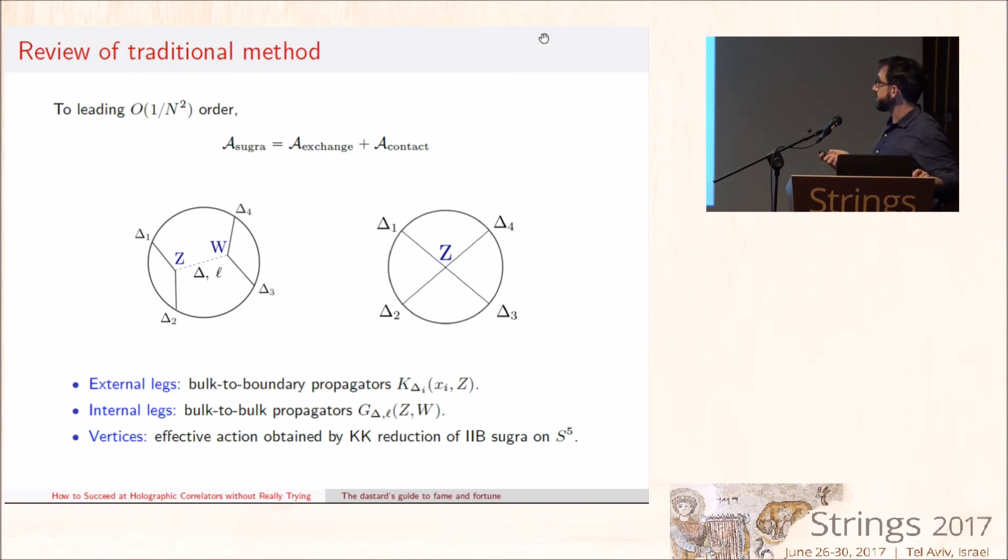On the gravity side, one is instructed to compute the sum of tree-level Witten diagrams, which are just position space Feynman diagrams where the external legs are treated differently than the internal legs. This is a sketch of anti-de Sitter space. The interior is the space, and the circle represents the boundary, which is flat space where the field theory lives. Z and W are bulk coordinates, so you have a bulk-to-bulk propagator with boundary conditions such that it decays fast near the boundary, whereas the bulk-to-boundary propagators obey Dirichlet boundary conditions, which reflects the fact that the external legs are LSZ reduced. This is an on-shell diagram.